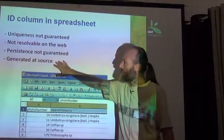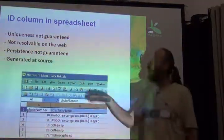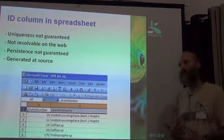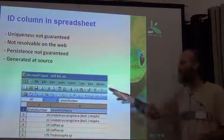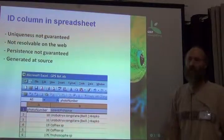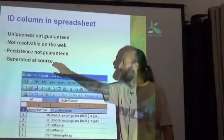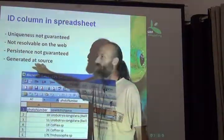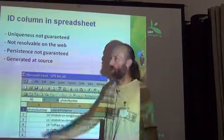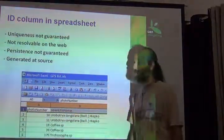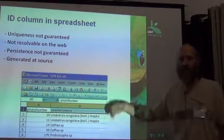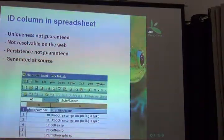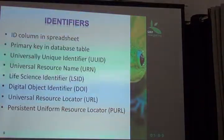The final category of characteristics is your ability to create that identifier yourself. In an Excel spreadsheet, no problem — you can put the identifier in yourself, meaning you can generate it at the source. So I want to look at these characteristics for all the categories I showed you in the previous slide.